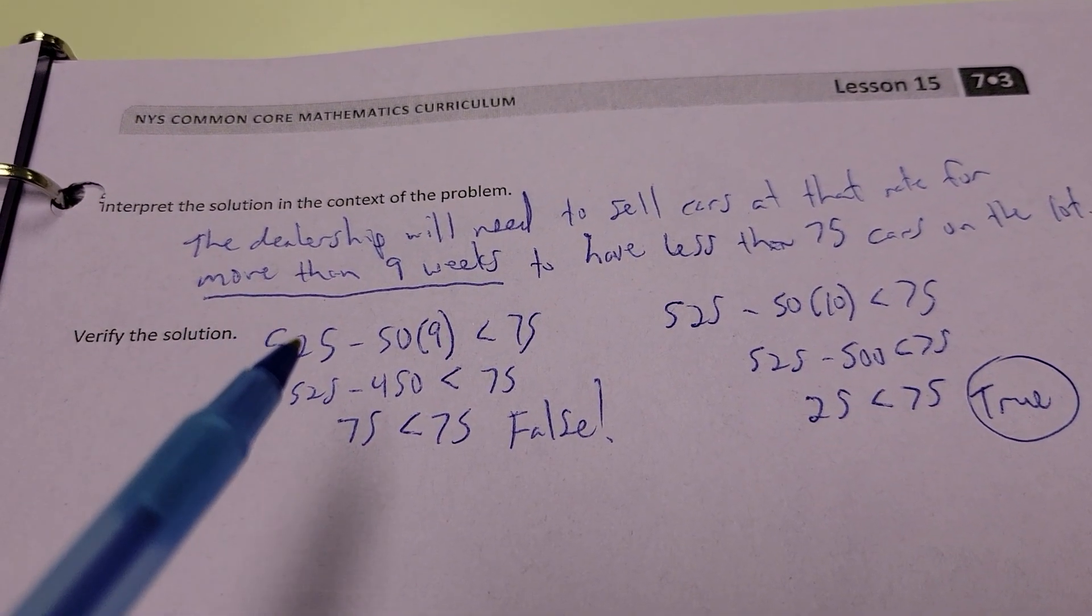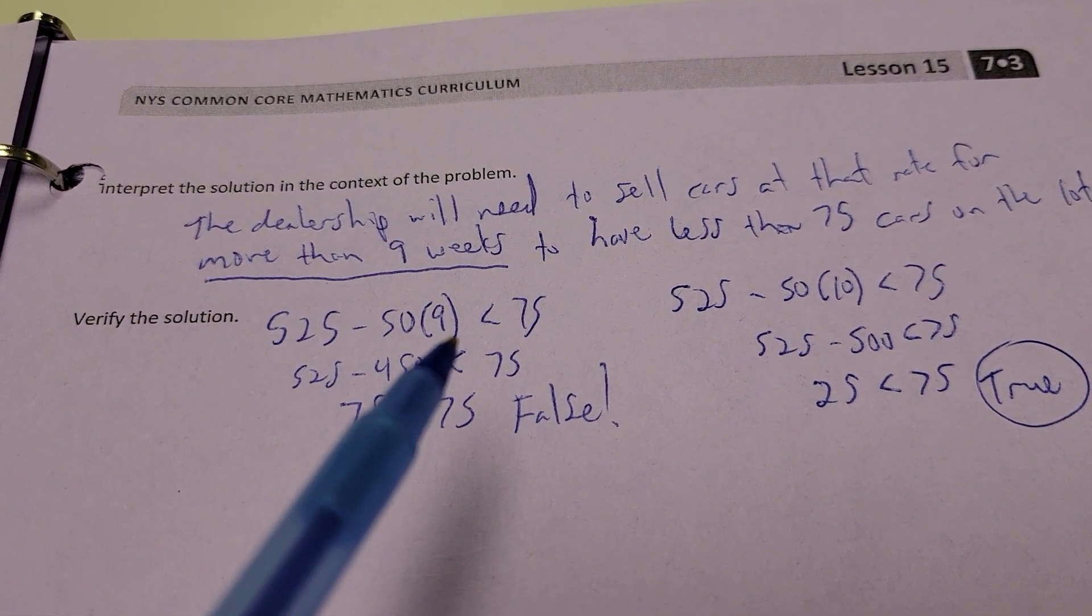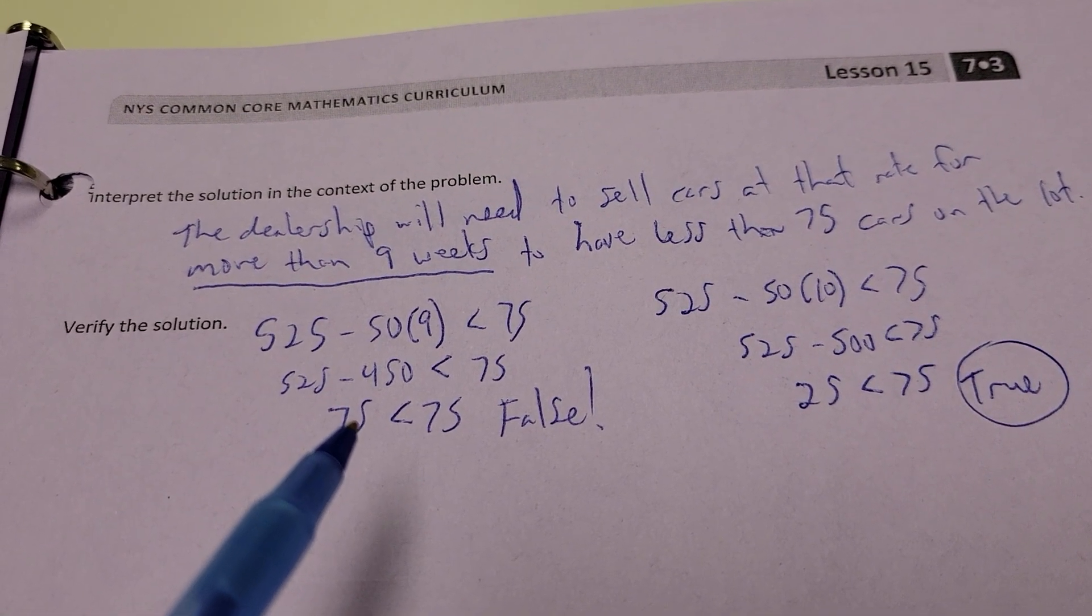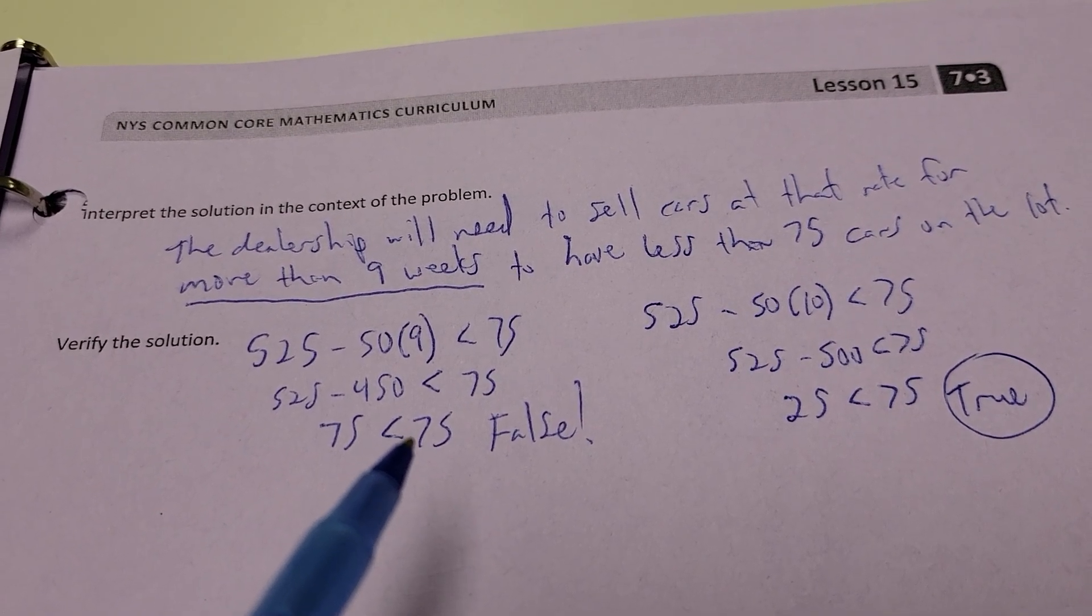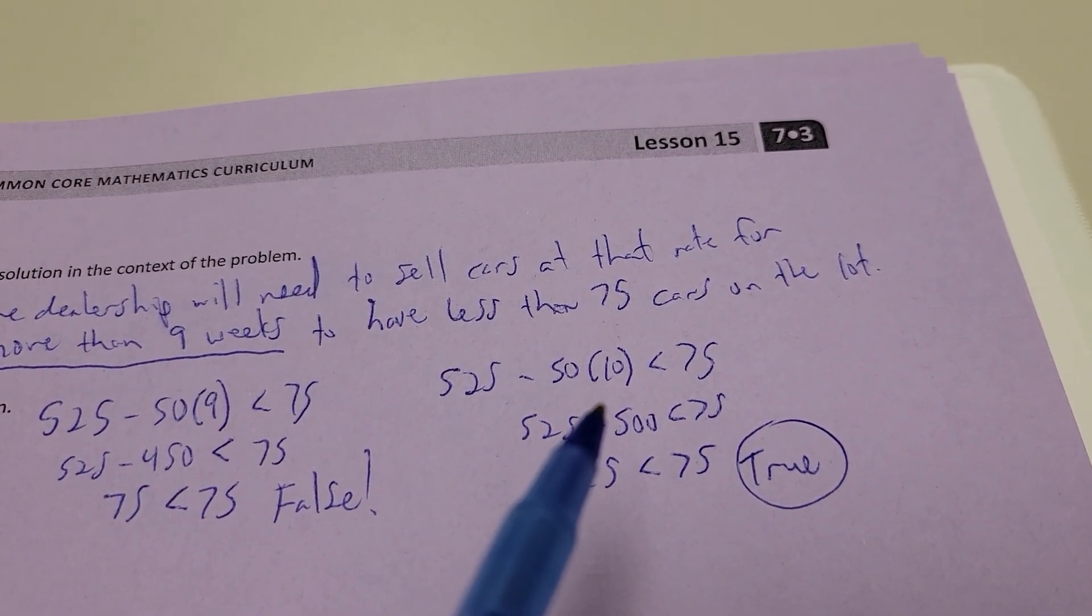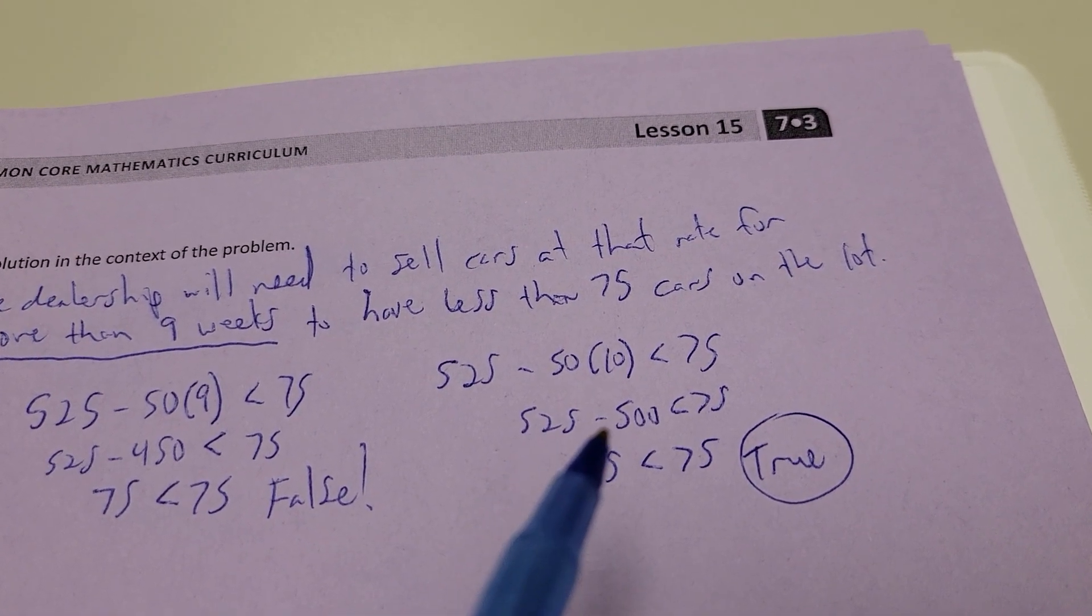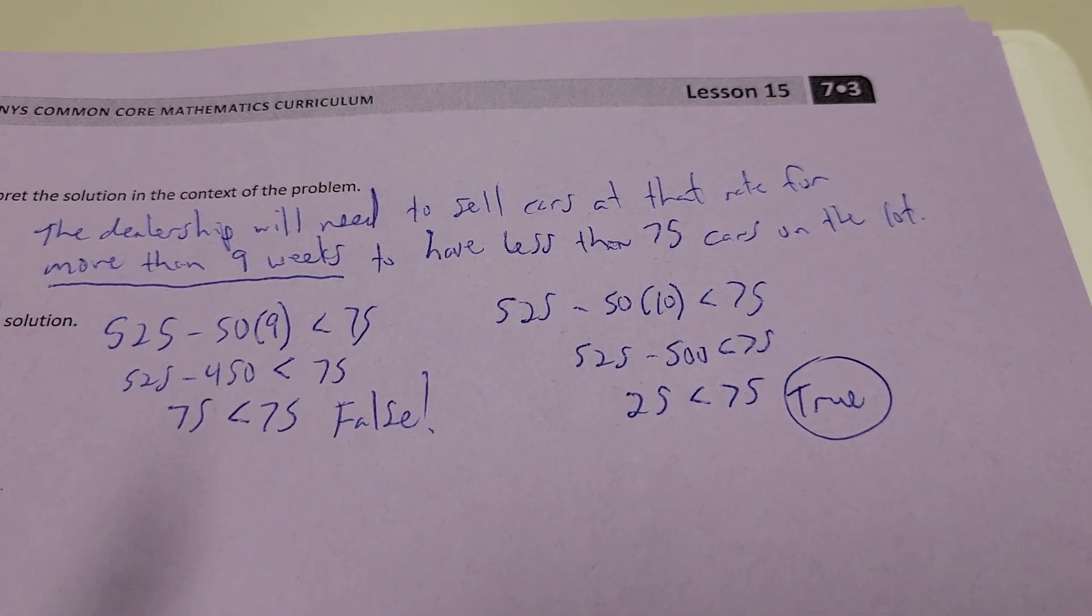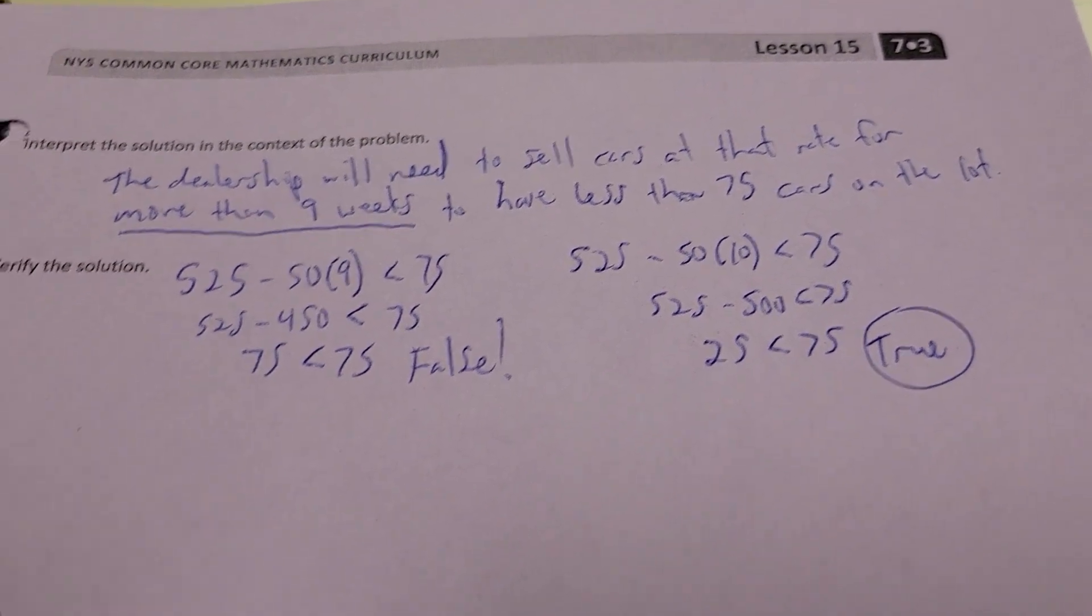Why is it more than 9? Well, because if you actually substitute a 9 in here, 525 minus 50 times 9, you get 75. And that's not less than 75. It's equal to. If you sell cars for 10 weeks, it's 525 minus 50 times 10. 525 minus 500 gives you 25, and 25 is less than 75. So, that's why it's got to be more than 9 weeks. So, 10 weeks and more works.